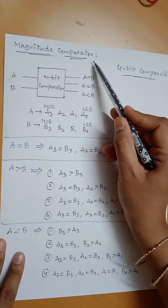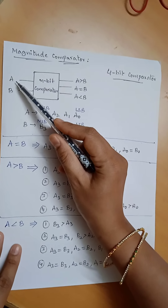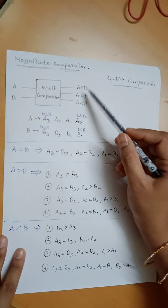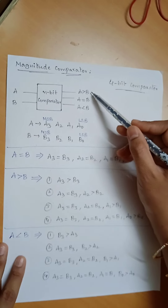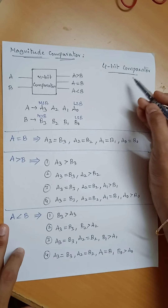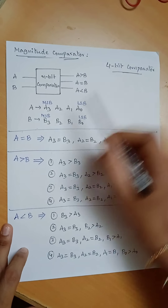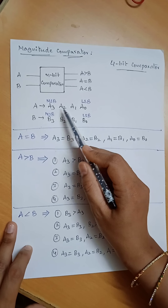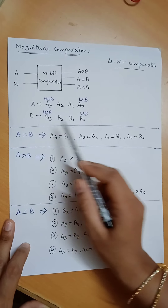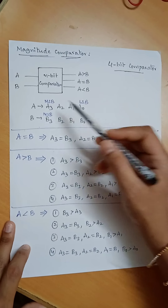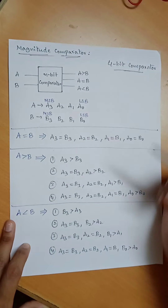A magnitude comparator is a combinational circuit which is able to compare 2 numbers, A and B, and give the comparison between 2 inputs: A greater than B, A equal to B, and A less than B. In this experiment we compare 2 four-bit numbers. A has 4 digits A0, A1, A2, A3, and B has 4 bits B0, B1, B2, B3. A0 and B0 are LSB bits, and A3 and B3 are MSB bits.